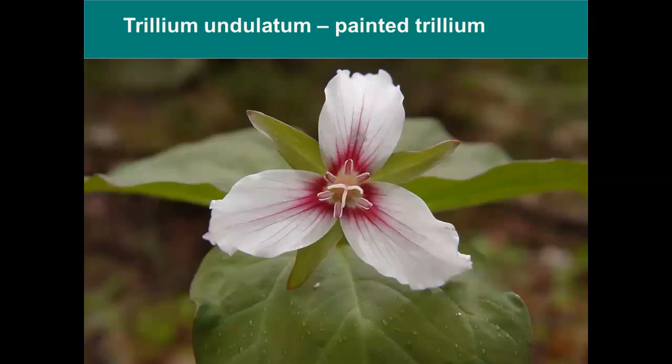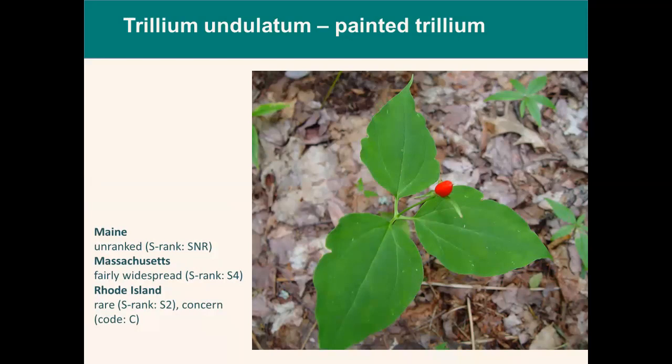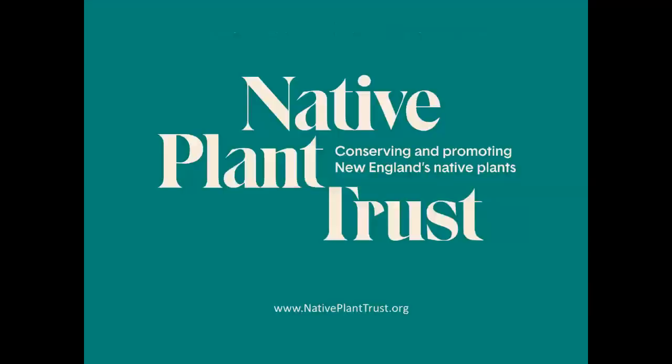Trillium undulatum, or painted trillium — also called painted wake robin — is the last plant I'll discuss in this overview of the Melanthaceae. Found through most deciduous, sometimes mixed forests on acidic soils and in deep shade. The petals are white with a distinctive red-purple crescent-shaped mark near the base, and the leaves have a short petiole, which you can see here. Occasionally unusual forms are attributed to the same kind of infection seen in grandiflorum, also from parasitic bacteria. You can see in this image the fleshy, berry-like fruit it produces. It is unranked in Maine, fairly widespread at S4 in Massachusetts, and rare enough to be of concern in Rhode Island due to the thinning of moist deciduous and mixed forests in that state.